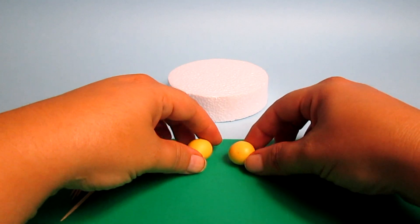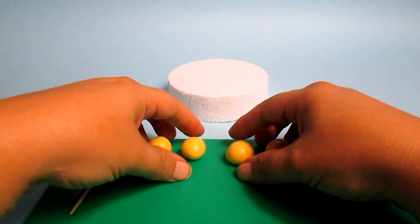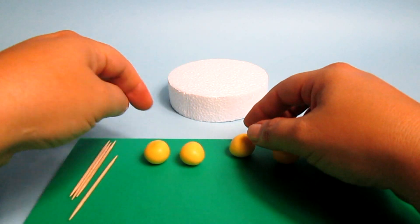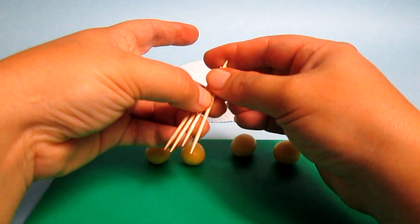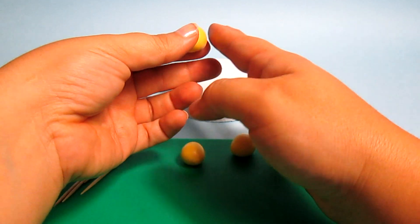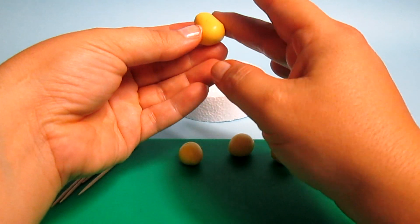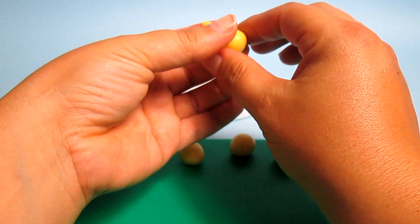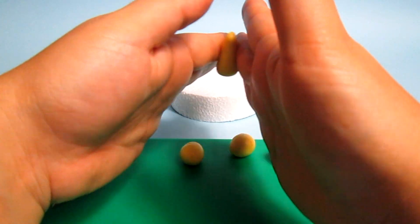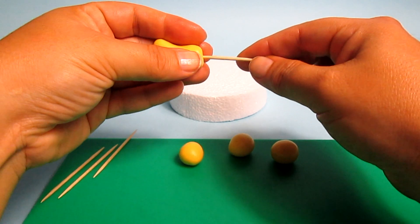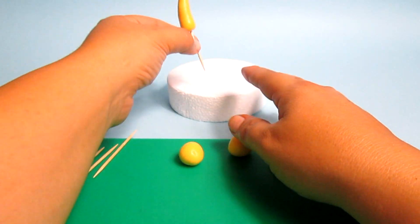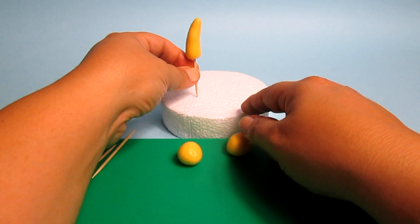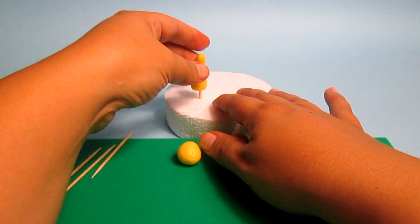Let's start making the feet and we're going to need four pearl yellow fondant and four cocktail sticks. What we're going to do is press so that we make a long drop, then we insert a cocktail stick inside and then we can insert it inside the cake or dummy.